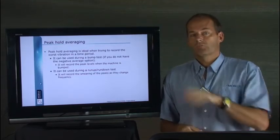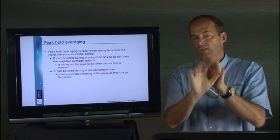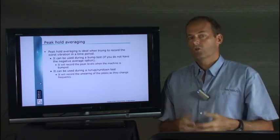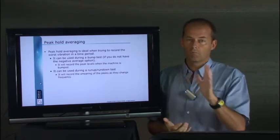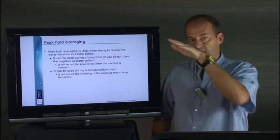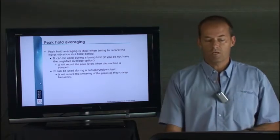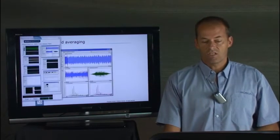As the machine changes in speed and all the peaks in the spectrum move, with peak hold averaging turned on it will keep the maximum value of frequency it ever sees. You will be able to see how the amplitude changes. There are other ways where we can use peak hold averaging.